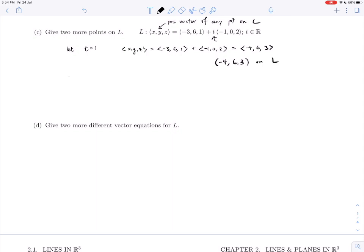That is true for whatever value I choose. If I choose t=0, I'll get the point I can already see. Let's choose t=-1. Any choice of t will give you a point on L. If I put in -1 here, I'm going to get -1 times (-1, 0, 2), so I'm subtracting. I'm going to get (-2, 6, -1) as the position vector, so (-2, 6, -1) as a point is on L.